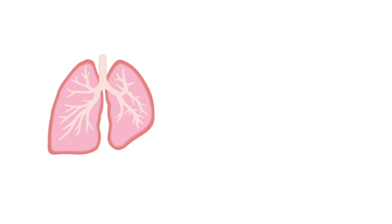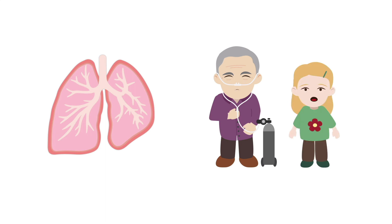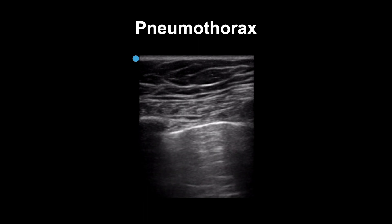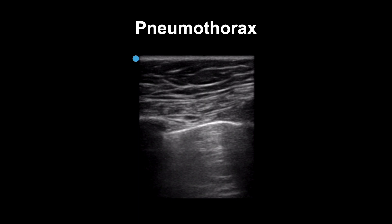Pneumothorax is a classic diagnosis to make with lung ultrasound and an important alternative explanation for someone who's short of breath — whether an older person with chronic obstructive pulmonary disease or a young person presenting with dyspnea. On this lung ultrasound of a patient with pneumothorax, there's no movement or lung sliding seen on the right part of the pleura, which is sensitive but not totally specific. On the left side, there's movement as the lung slides in — this is a lung point sign, and it is specific for pneumothorax.